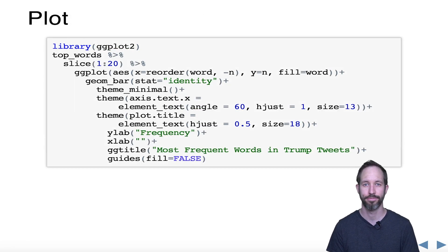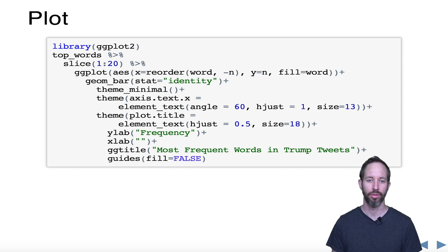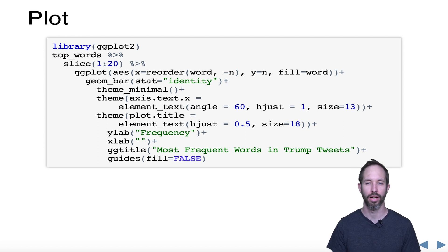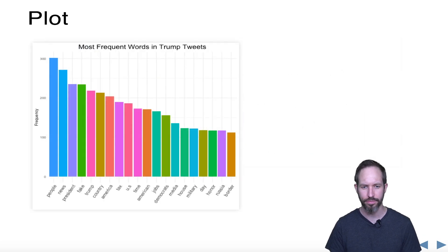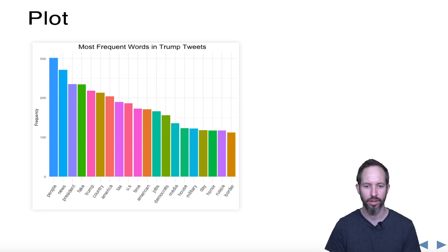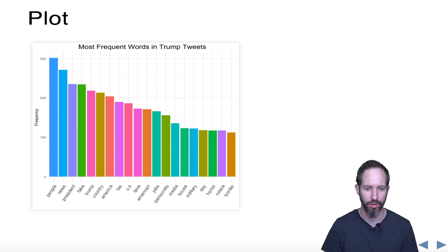Now we've created a new data frame called top_words. We're using ggplot, slicing the data frame — which has been sorted so the most frequent words are at the top — slicing off the first 20, ordering by frequency, and creating a bar graph with various aesthetics. Looking at these words, we can start to see things recognizable as President Trump's voice on Twitter — words like president, news, people, fake, country.